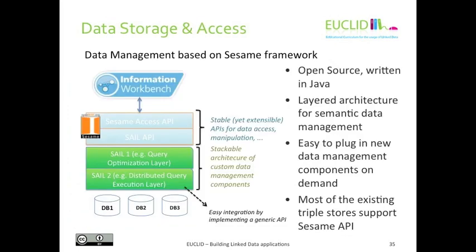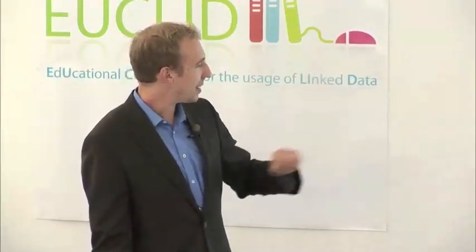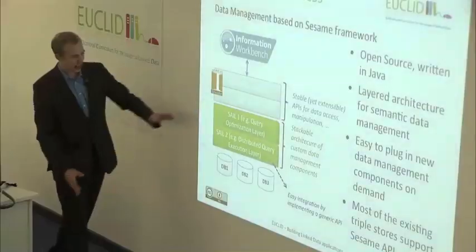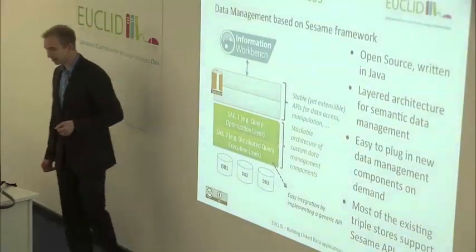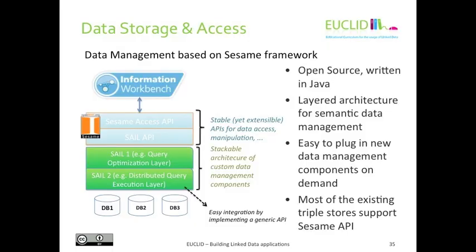To access the data, we are basically using an open source framework called Sesame OpenRDF, which is a very popular RDF management API and system. That's the basis we are plugging in here. This also comes in a layered architecture. There are triple stores at the very low level, which can be replaced by other components. Then there are so-called sail layers, which are basically access layers to the linked data and RDF data. On top of that, we interact with this open framework to get and store our data.